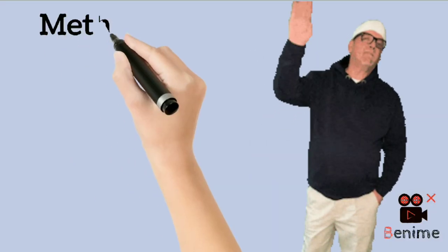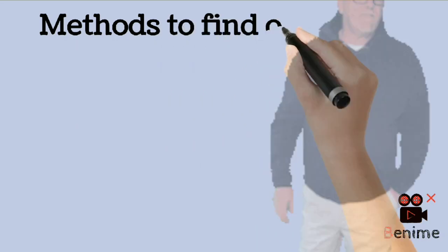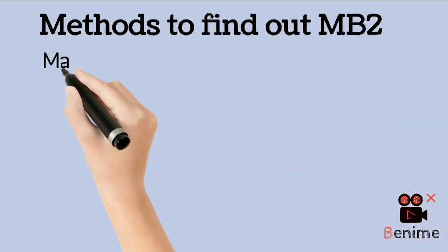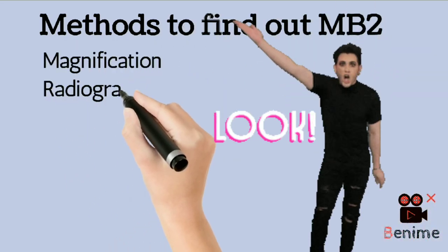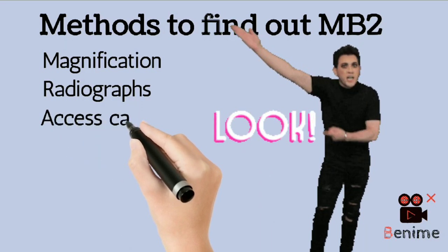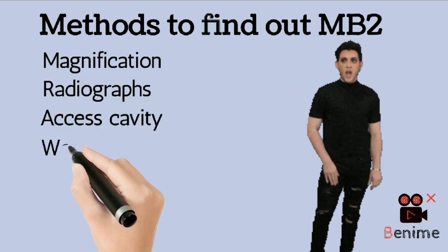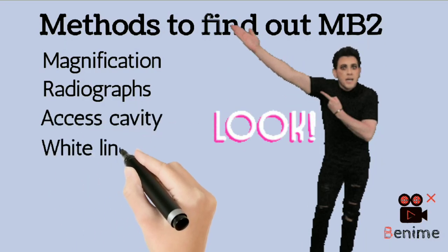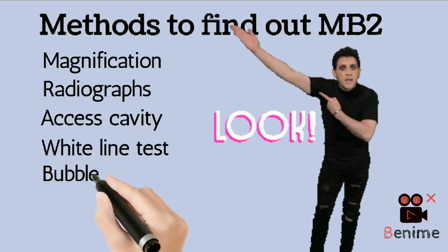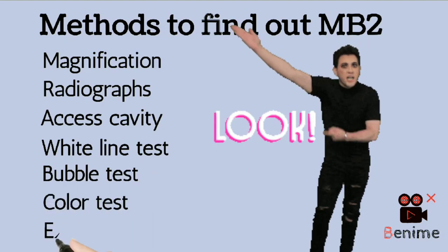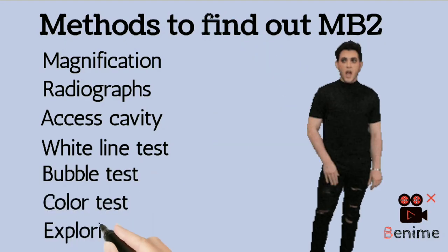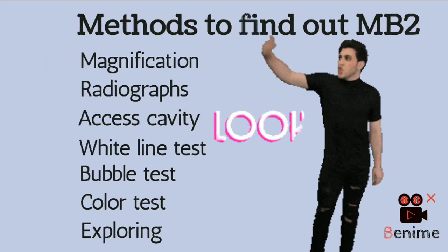The infamous MB2 canal — no worries. Let's look into the methods to find the MB2 canal. First is magnification, then radiographs, access cavity, white line test, champagne bubble test, color test, and exploring.